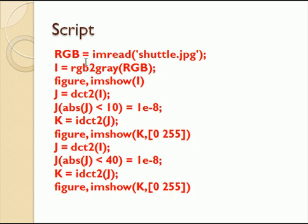I use the imread command to read in a shuttle picture that I downloaded from the web. I convert it to grayscale using the RGB to gray command. Then I show it to take a look at what the picture looks like before compression. Then I take the discrete transform.